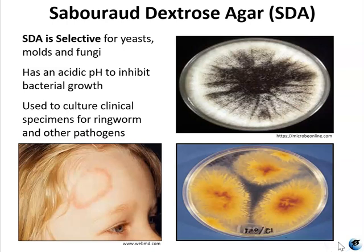Sabouraud dextrose agar, SDA, is really similar to PDA in that it has an acidic pH that inhibits bacterial growth. SDA is primarily used for the selective cultivation of yeast, mold, and fungi — certain pathogenic fungi specifically. It's often used to identify microbial contamination in food and cosmetics. In many ways it's very similar to PDA. What grows better on PDA versus SDA sometimes comes down to the particular species, but in general, yeasts, molds, and fungi will grow much better on SDA or PDA than bacteria will.